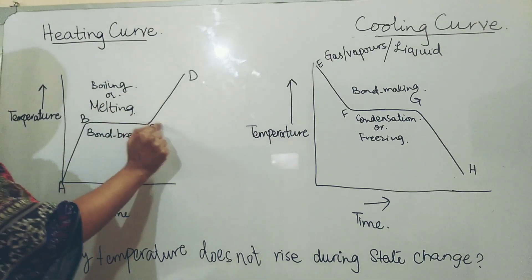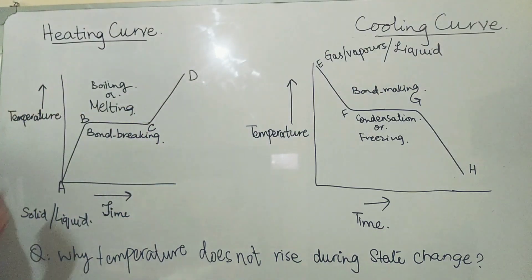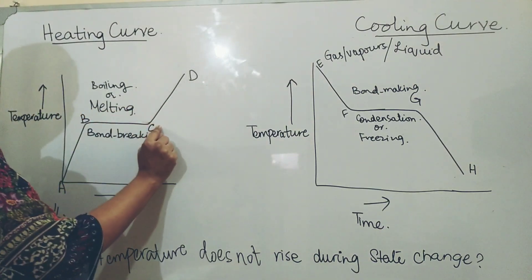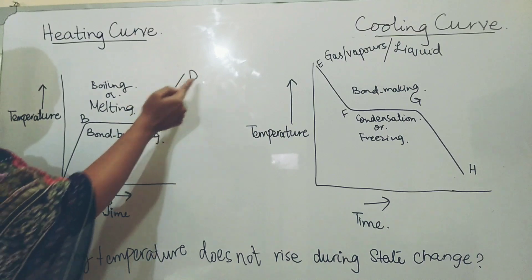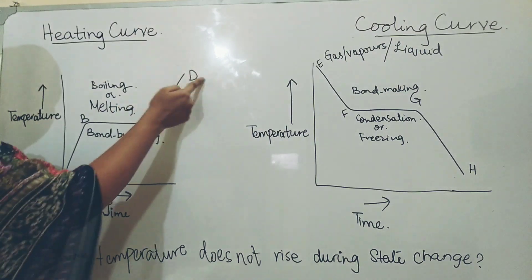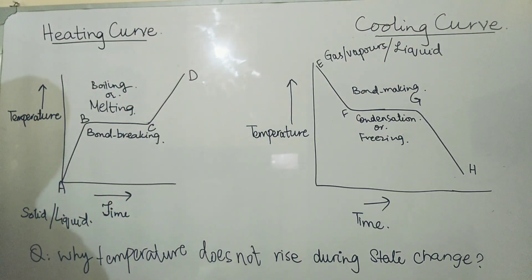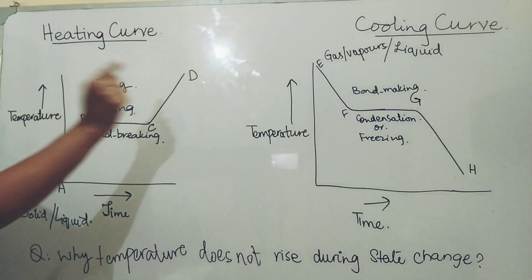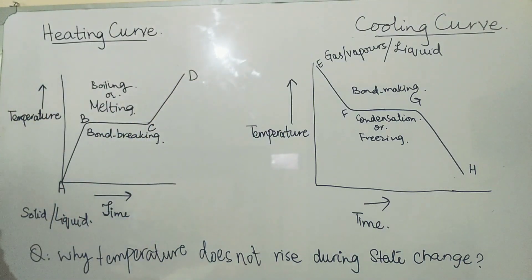At C, all the solid has melted and here we will find only the liquid substance. From C to D, the temperature of the liquid will start rising and it will become maximum at D.